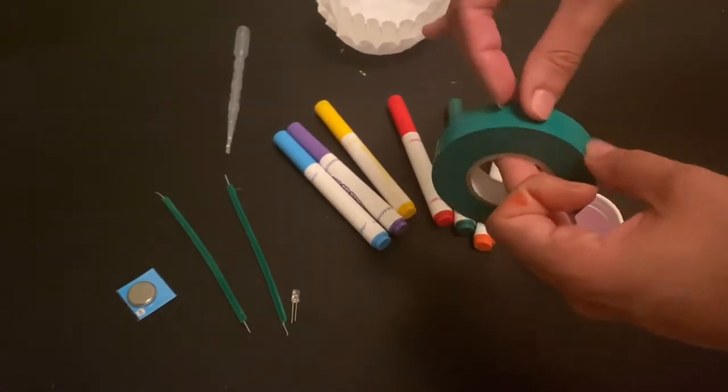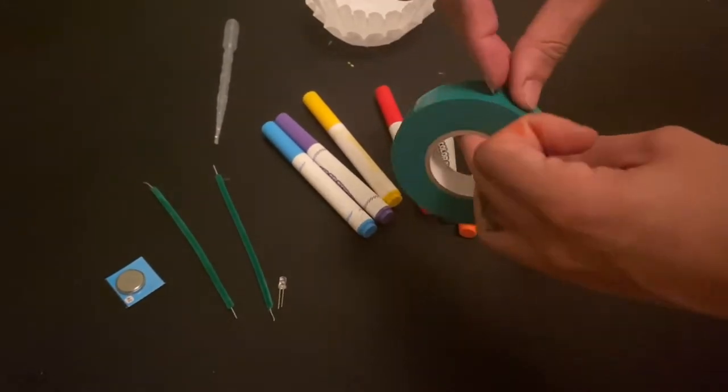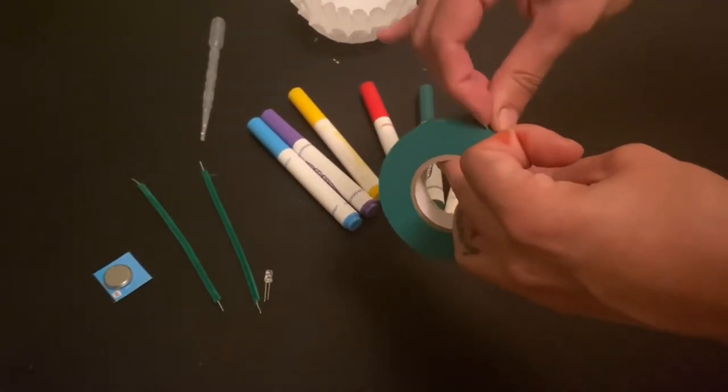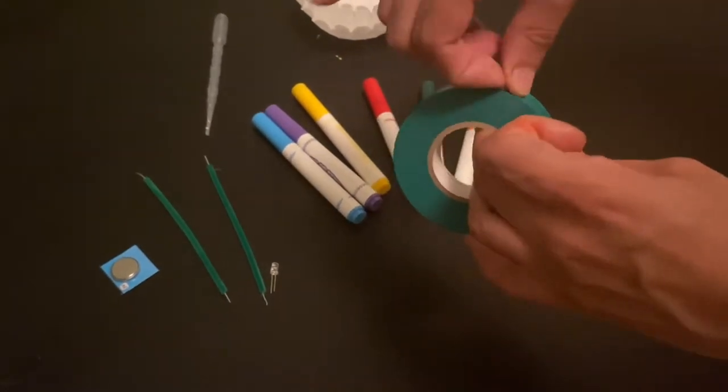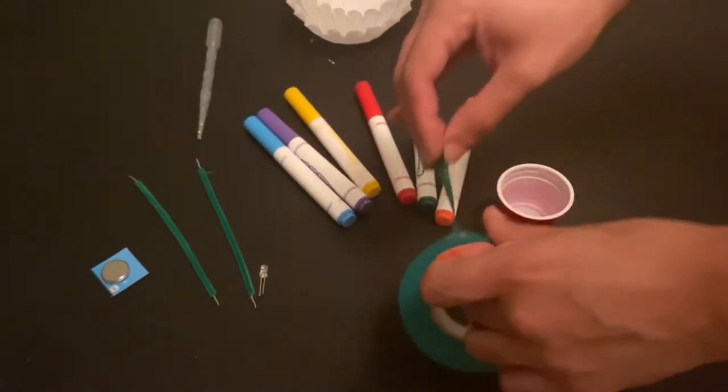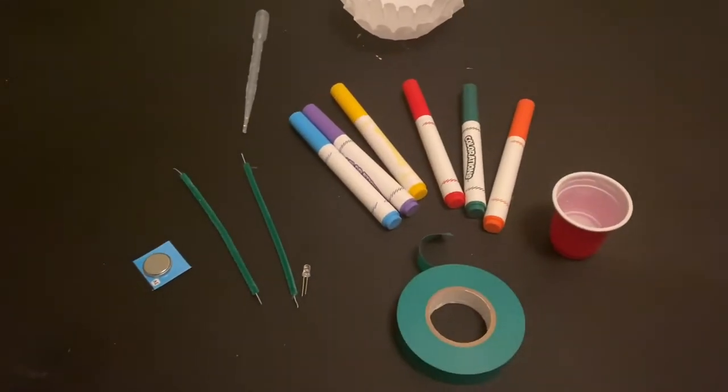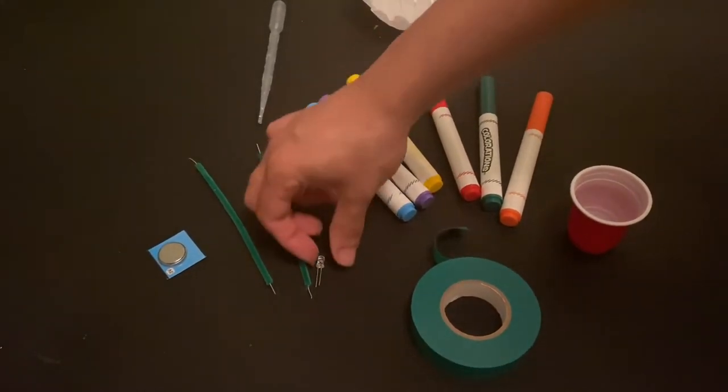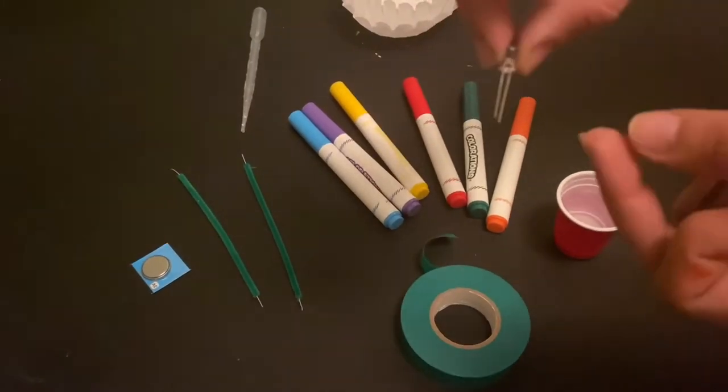Electrical tape, and we chose green to match our stem. You're also going to need an LED light bulb. We have this little one here which has the diodes, those are the two prongs at the bottom.